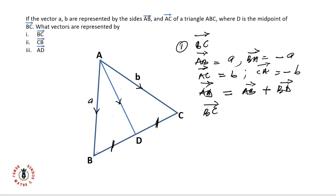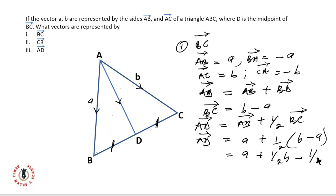We've got BC to be equals to b minus a. So that AD now will be the same thing as AB plus half BC, because we're told that D is midpoint. So that AD will be the same thing as AB is given as a plus half into b minus a. That is equals to a plus half b minus half a, which is equals to half a plus half b.